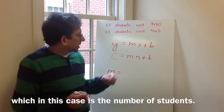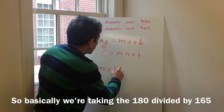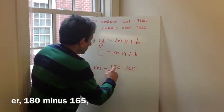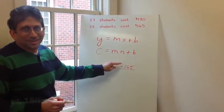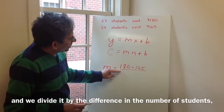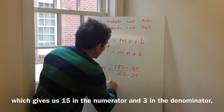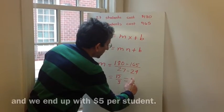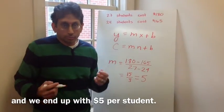So basically we're taking 180 minus 165, and we divide it by the difference in the number of students, 27 minus 24, which gives us 15 in the numerator, 3 in the denominator, and we end up with 5 dollars per student.